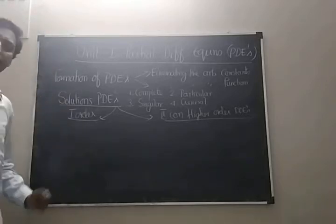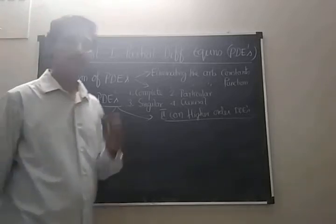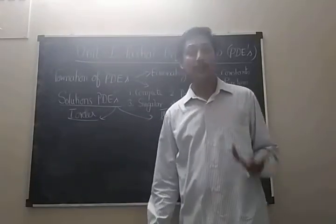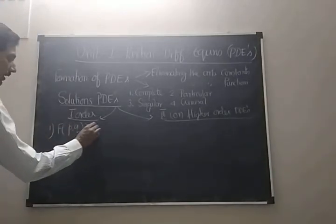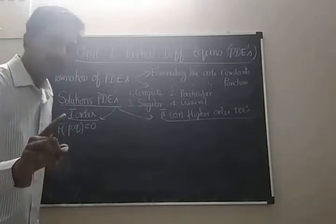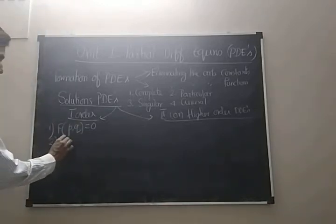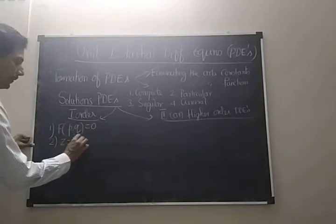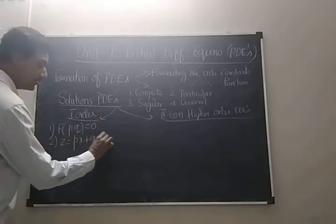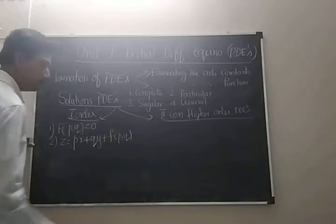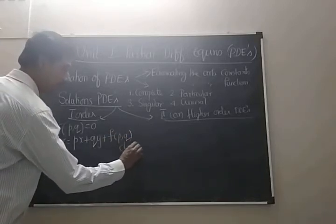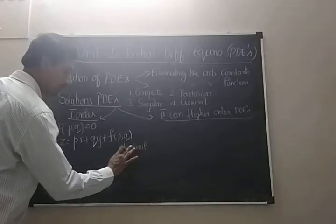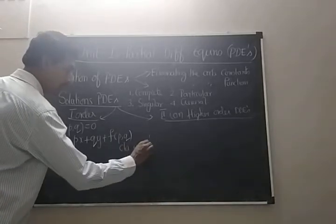In the first order partial differential equations, we have some standard types only. What are the types? Type number one: it is a function of P comma Q is equal to zero. I can tell you what is P, what is Q later. Number two is called Z equals PX plus QY plus the function of P comma Q. This is known as Clairaut equation, C-L-A-I-R-A-U-T, Clairaut equation.